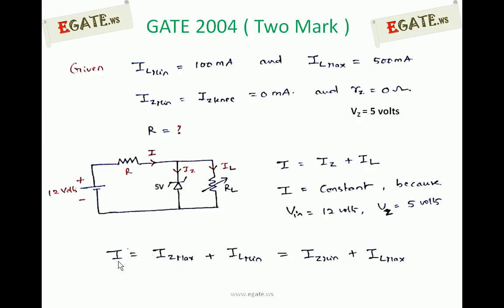Constant current can be written as, if minimum current is flowing through load, maximum current should be taken by the Zener diode. Otherwise, if minimum current is taken by the Zener diode, at that time maximum current should go through the load.